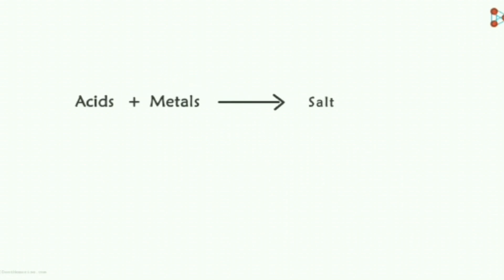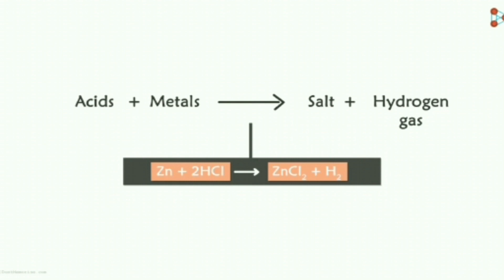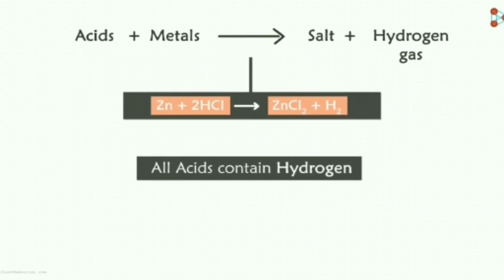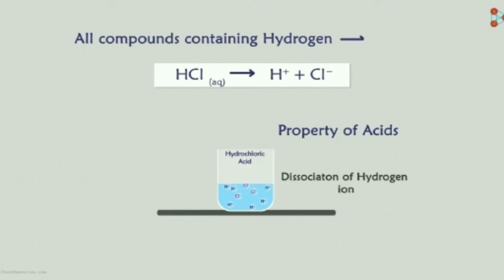Why don't some acids like glucose or alcohol conduct electricity? We know that acid + metal gives salt + hydrogen gas — for example, hydrochloric acid + zinc gives hydrogen gas + zinc chloride. By this, we know that all acids contain hydrogen, for example hydrochloric acid, sulphuric acid, nitric acid. But do all compounds containing hydrogen behave as acids? To find this, let us perform an activity.